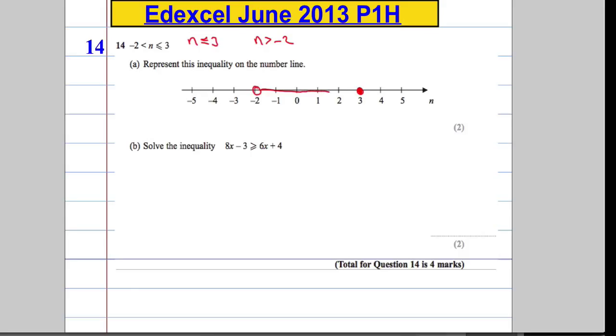n can be any value within that interval. For part B, we're asked to solve the inequality. You tackle this very much in the same way as you would tackle an equation. I'm going to start by adding 3 to both sides because we want to isolate the x, so we get 8x is greater than or equal to 6x plus 7.